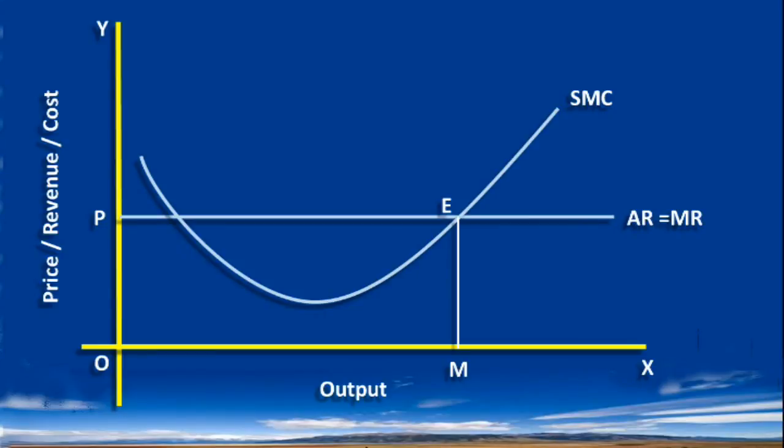SAC is the short run average cost curve. It is well above the average revenue curve. At the point of equilibrium, its average revenue is ME. Its average cost is MF. Average revenue is less than average cost by EF. EF is the loss per unit.